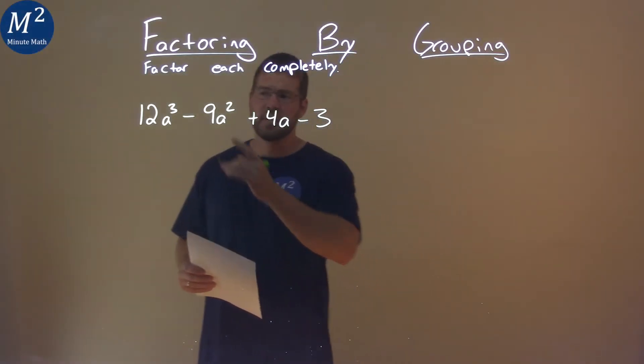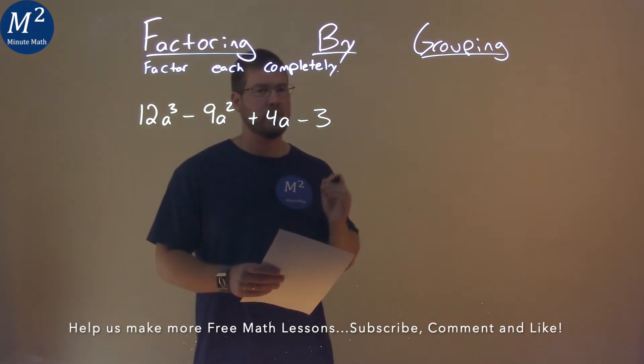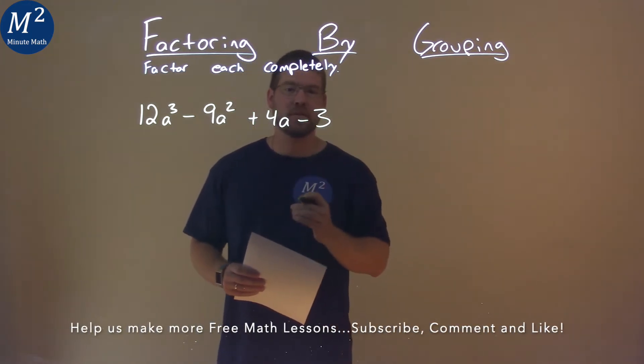We're given this problem right here: 12a to the third power minus 9a squared plus 4a minus 3, and we need to factor this completely.